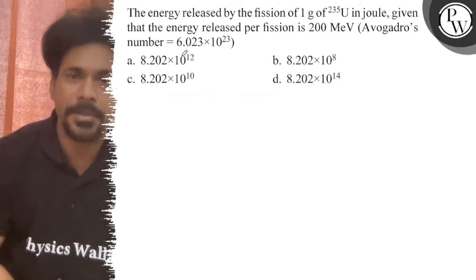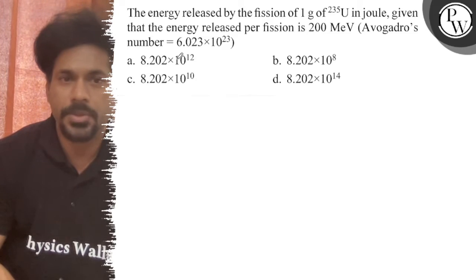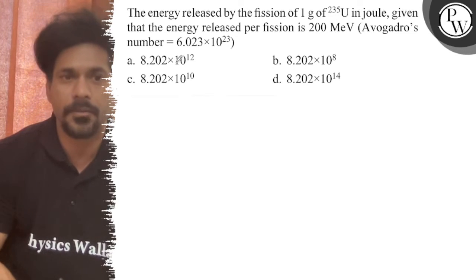Hello, let's see the question. The energy released by the fission of 1 gram of uranium-235 in joules, given that the energy released per fission is 200 mega electron volts.